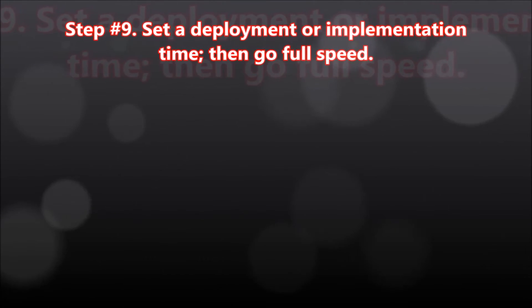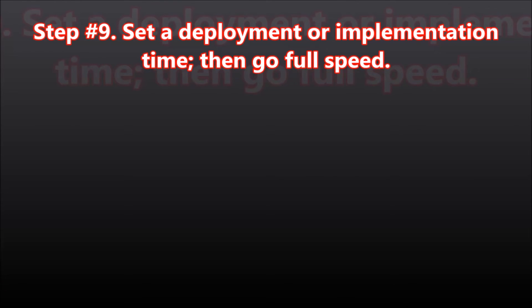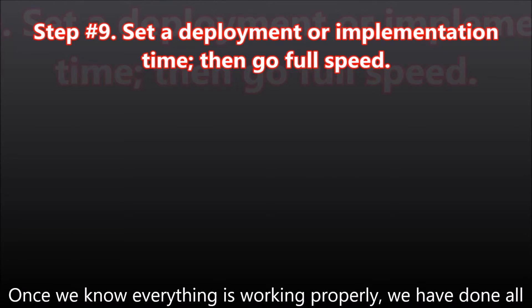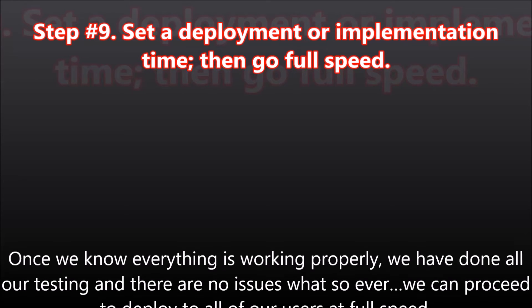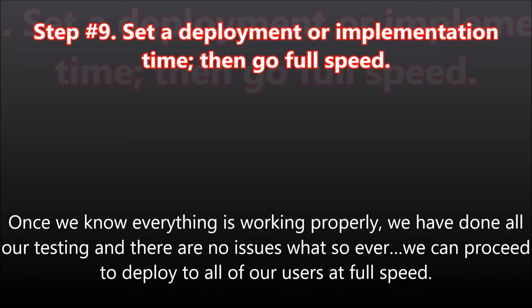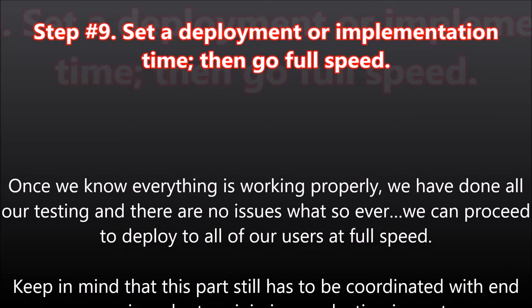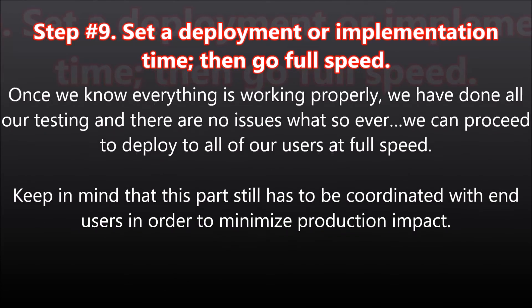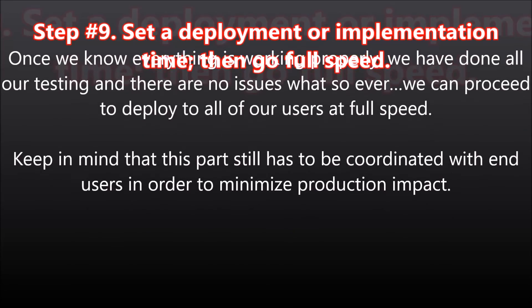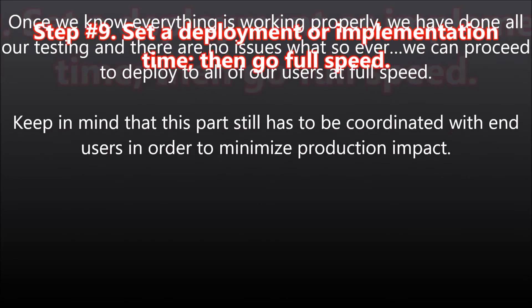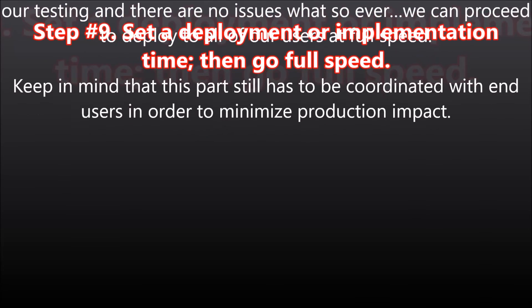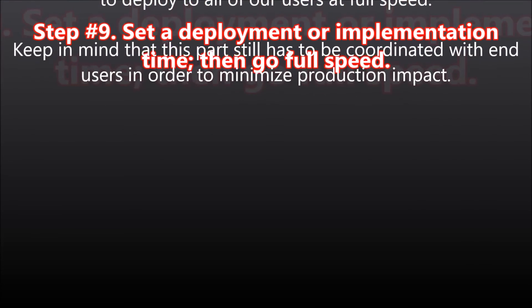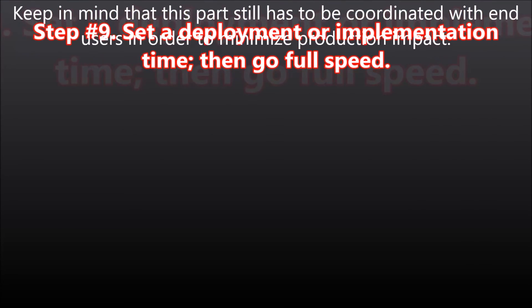Step number nine: set a deployment or implementation time, then go full speed. Once we know everything is working properly — we have done all our testing and there are no issues whatsoever — we can proceed to deploy to all our users at full speed. Keep in mind that this part still has to be coordinated with end users in order to minimize production impact.